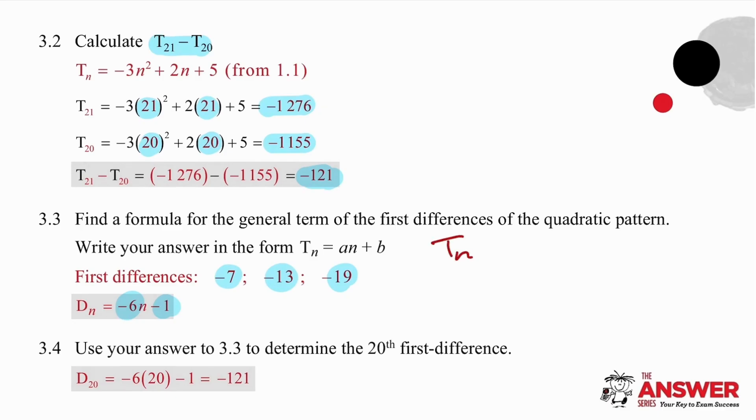If you don't enjoy inspection, you can go back to the formula an plus b. Substitute the negative 6 immediately because that is the coefficient of n. And then, by substitution, you can substitute minus 7 for the term value, 1 for the position, and work out from this equation that b is equal to negative 1.